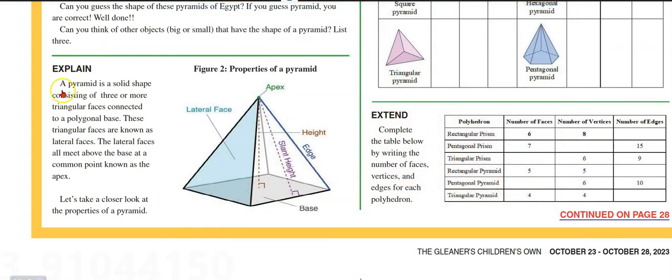A pyramid is a solid shape consisting of three or more triangular faces connected to a polygonal base. These triangular faces are known as lateral faces. The lateral faces all meet above the base at a common point known as the apex. Let's take a closer look at the properties of a pyramid.